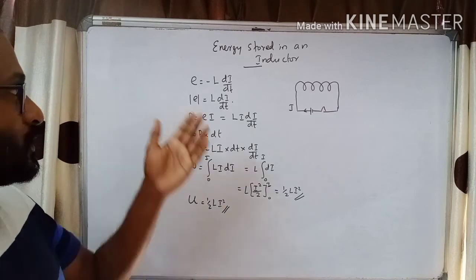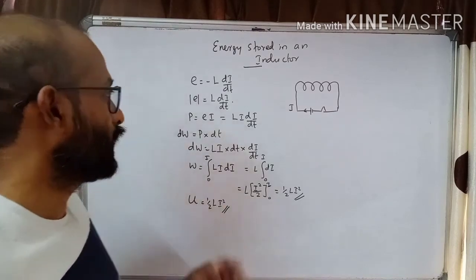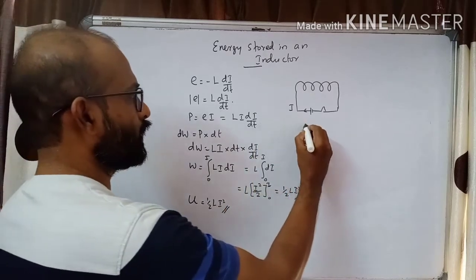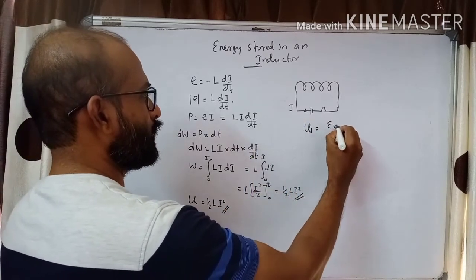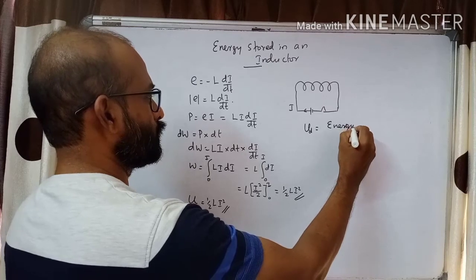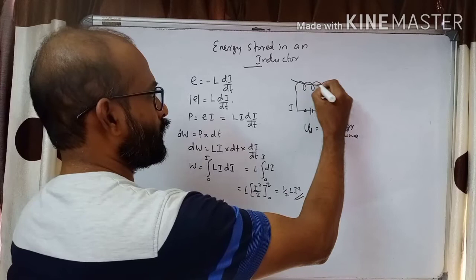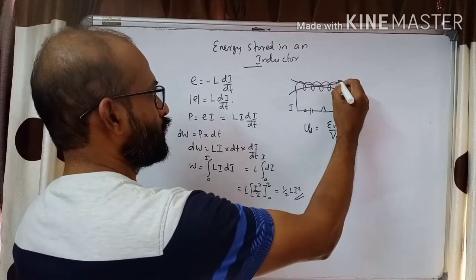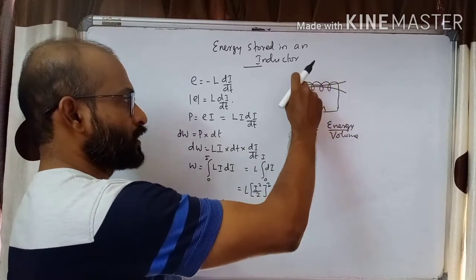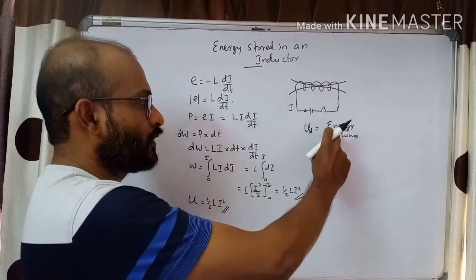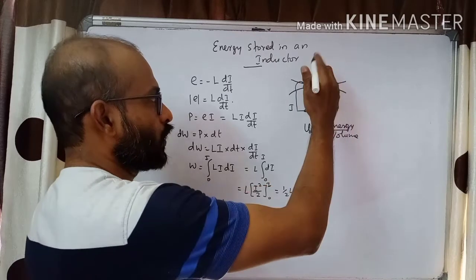We have seen the energy stored in an inductor. Now we will look at energy density. Energy density simply means energy per volume. There will be a magnetic field surrounding the solenoid, and the energy will be produced within the solenoid region. We need to find the energy stored per unit volume.